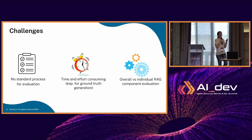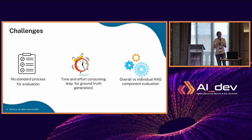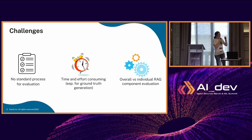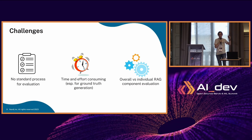The challenges of building this evaluation pipeline are that it's quite a new topic, so there is no standard process yet. It's relatively time-consuming, especially if you want to have some ground truth to compare the LLM-generated answer with. And there are also questions about how to perform this evaluation: are you evaluating the retriever results, the generation part, or the overall process — the final answer based on the initial user question?